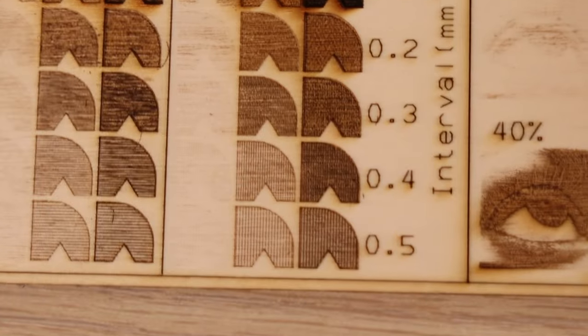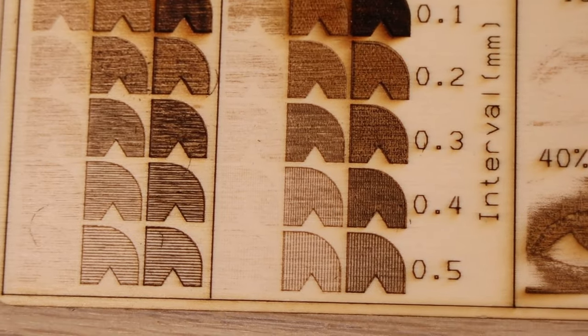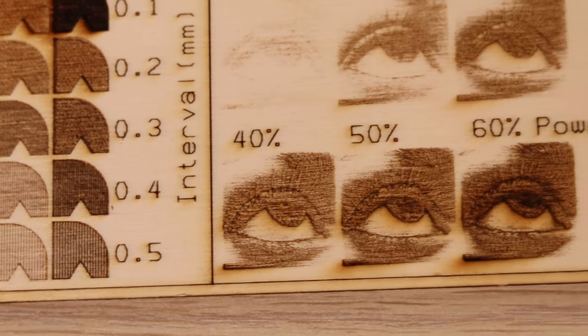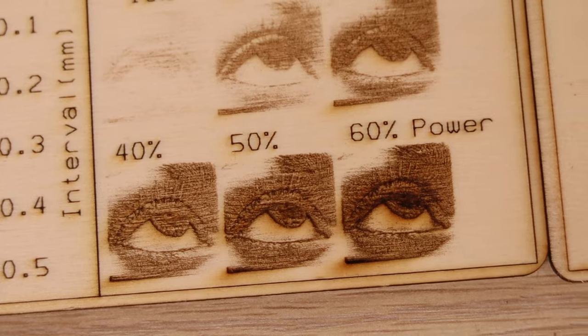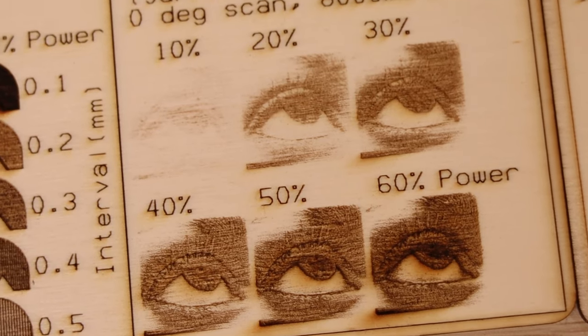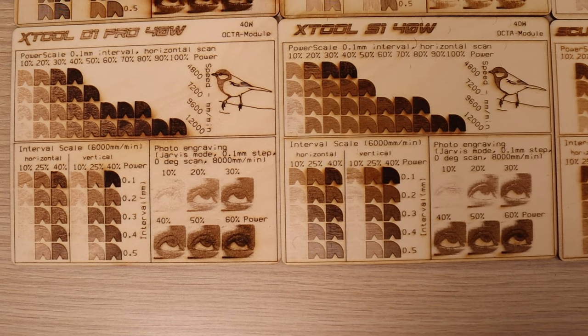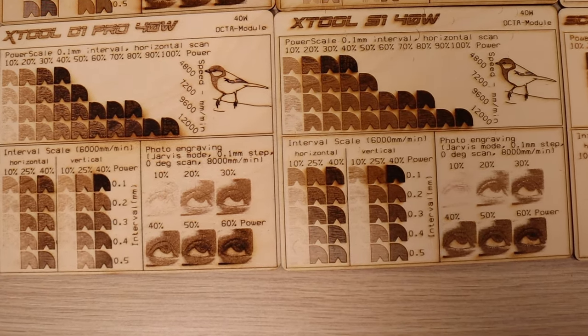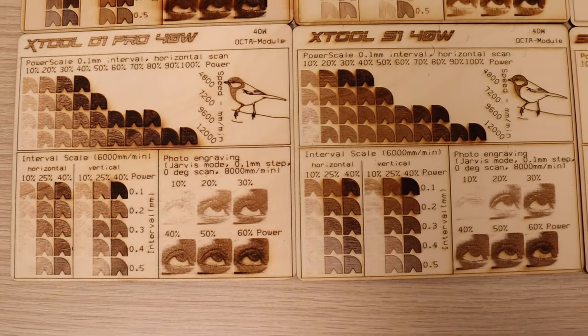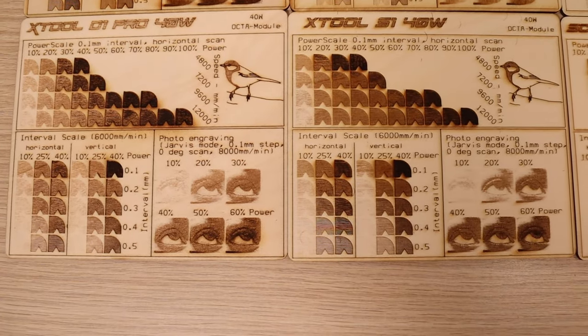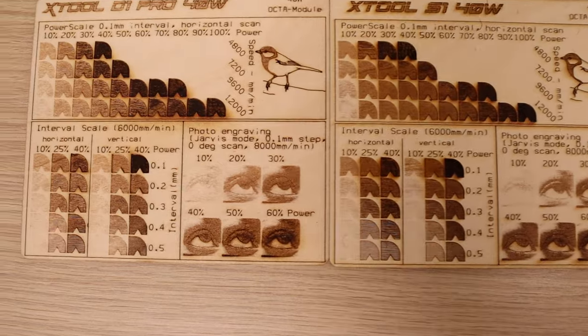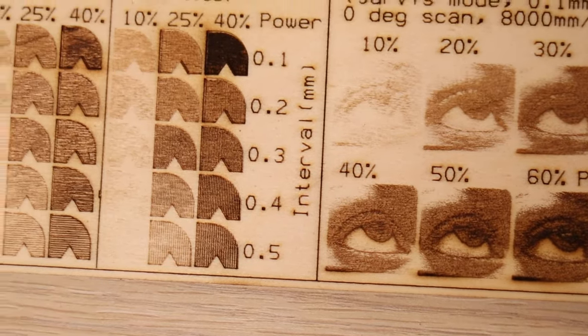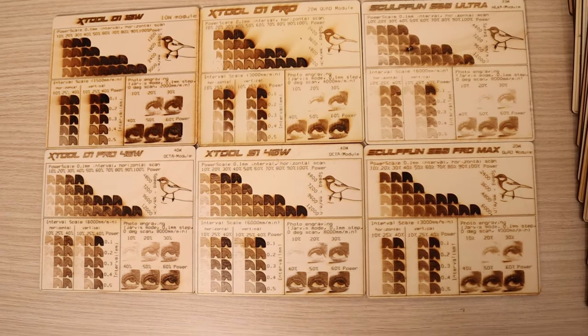The interval test looks pretty much the same in both directions, which means that the laser spot is rectangular. We will measure it later when engraving anodized aluminum. Photo engraving also looks good, and the details are great. Compared to 40W X-Tool D1, the pattern looks very similar, which is not surprising as the internals of laser diode are probably the same. Both machines also produce very little smoke stains, which is great.